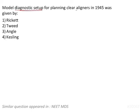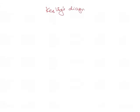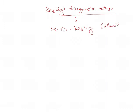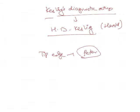The model diagnostic setup for planning clear aligners in 1945 was given by Dr. H.B. Kessling, also known as Dr. Harold Kessling. This is an important exam question because it could ask you to distinguish Harold Kessling — who gave the diagnostic setup — from Dr. Peter Kessling, who gave the Tip Edge appliance. These are two different Kesslings, so be careful not to confuse them.